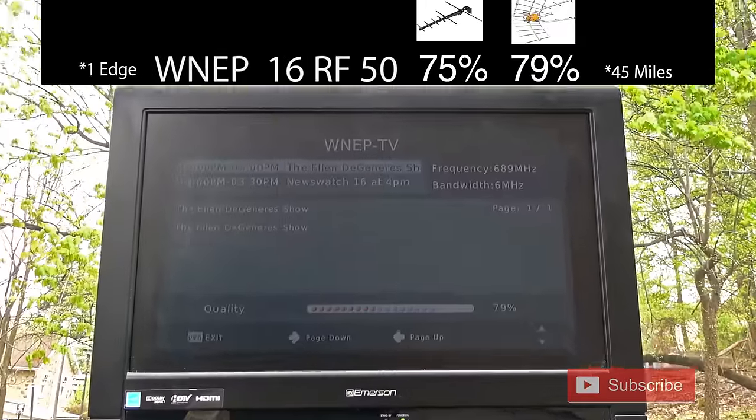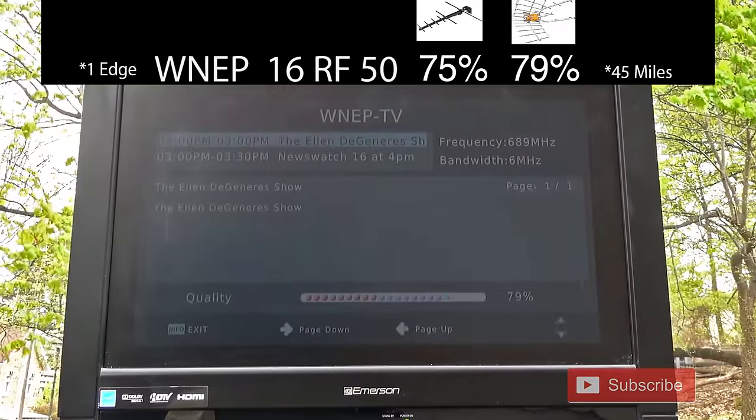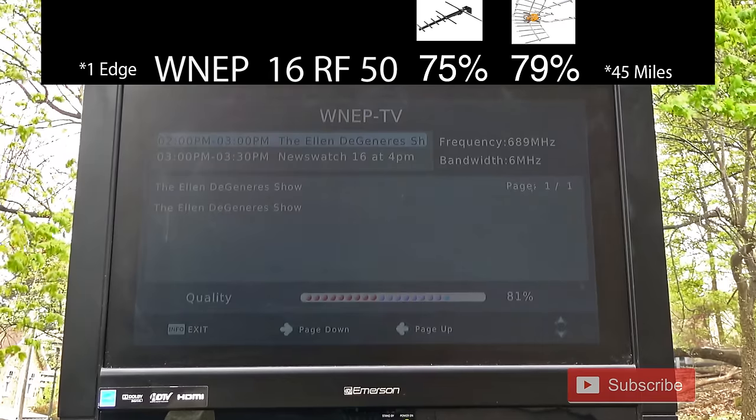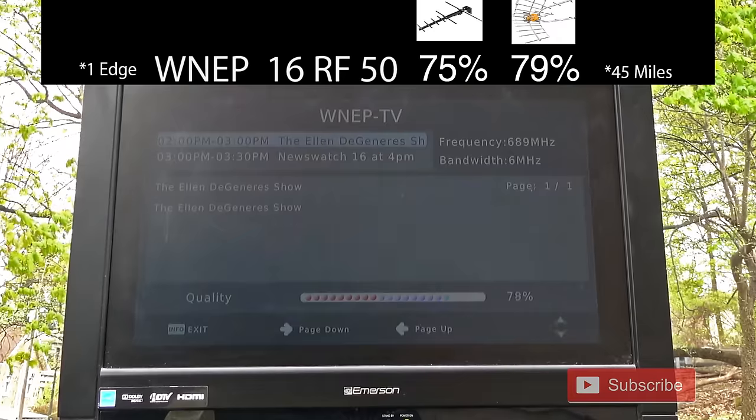The signal strength on WNEP, which broadcasts on UHF channel 50, was pretty decent with this antenna, about the same as a Televis antenna, a little bit higher than a Channel Master Stealth antenna.